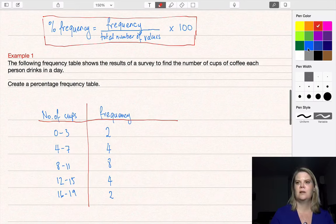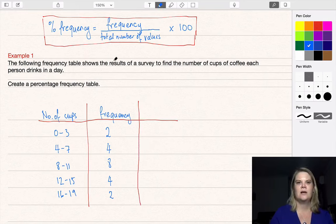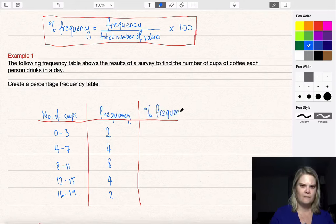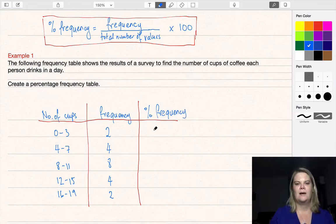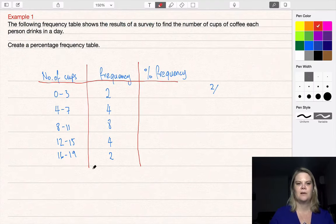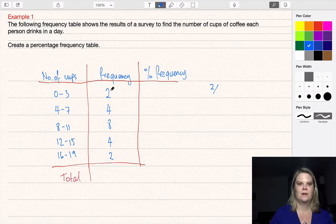For the first one, I'll draw a line for our final column. The first percentage frequency will be the frequency, which is 2, divided by the total number of values. That would be 2 plus 4 plus 8 plus 4 plus 2, which equals 20. So 2 out of 20 times 100 equals 10%.